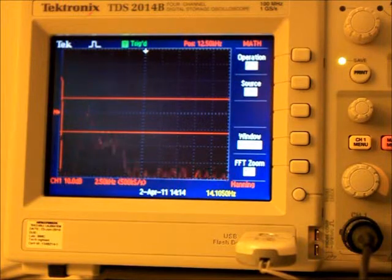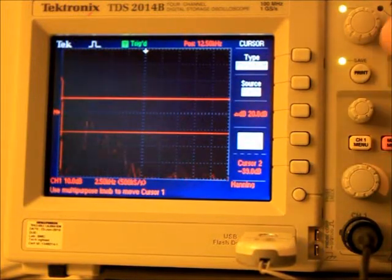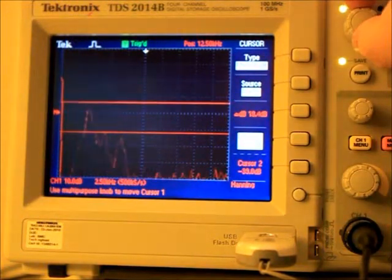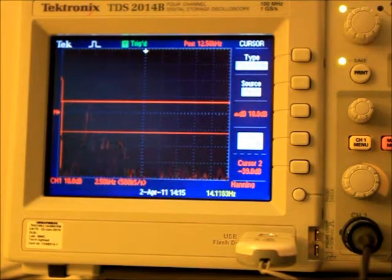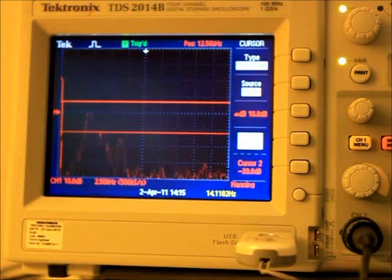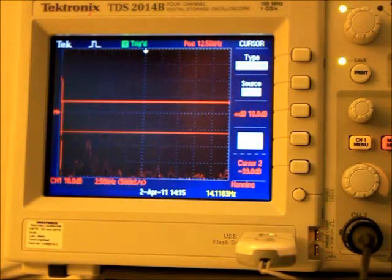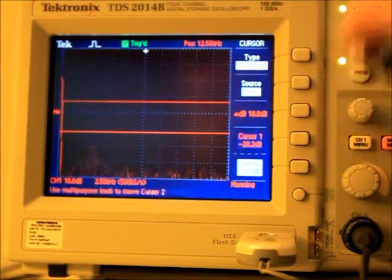We can set a cursor at this point, remove the object from the field of view, and set a second cursor. We can then see that we have a signal to noise ratio of about 24 dB for this particular object at this distance.